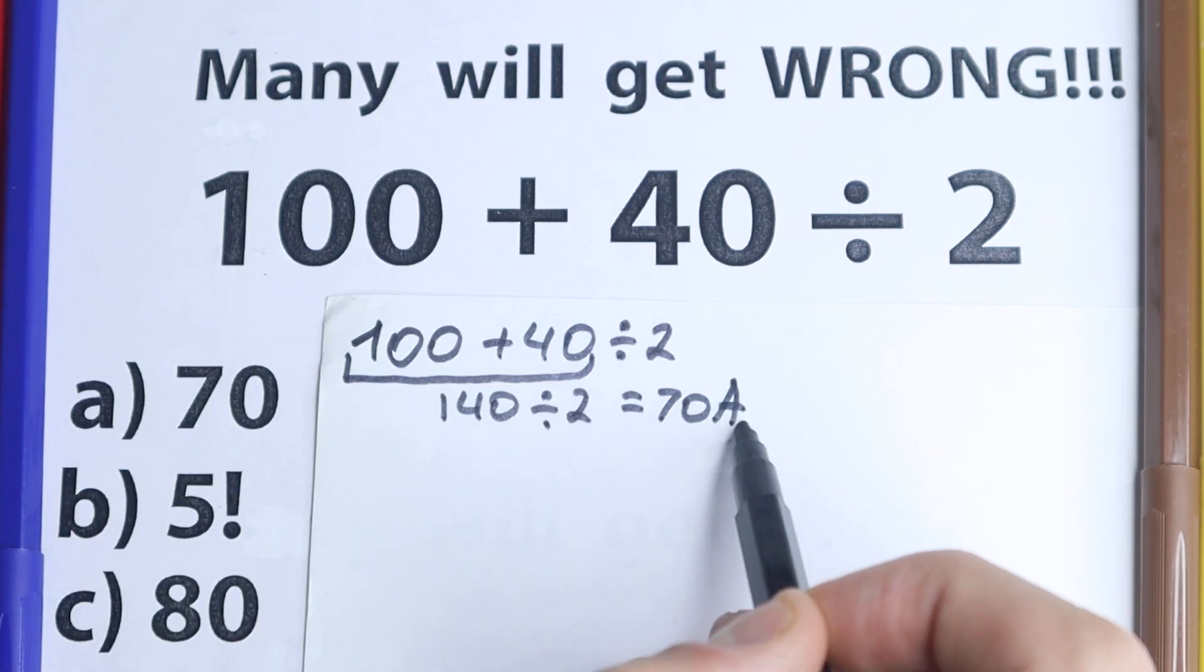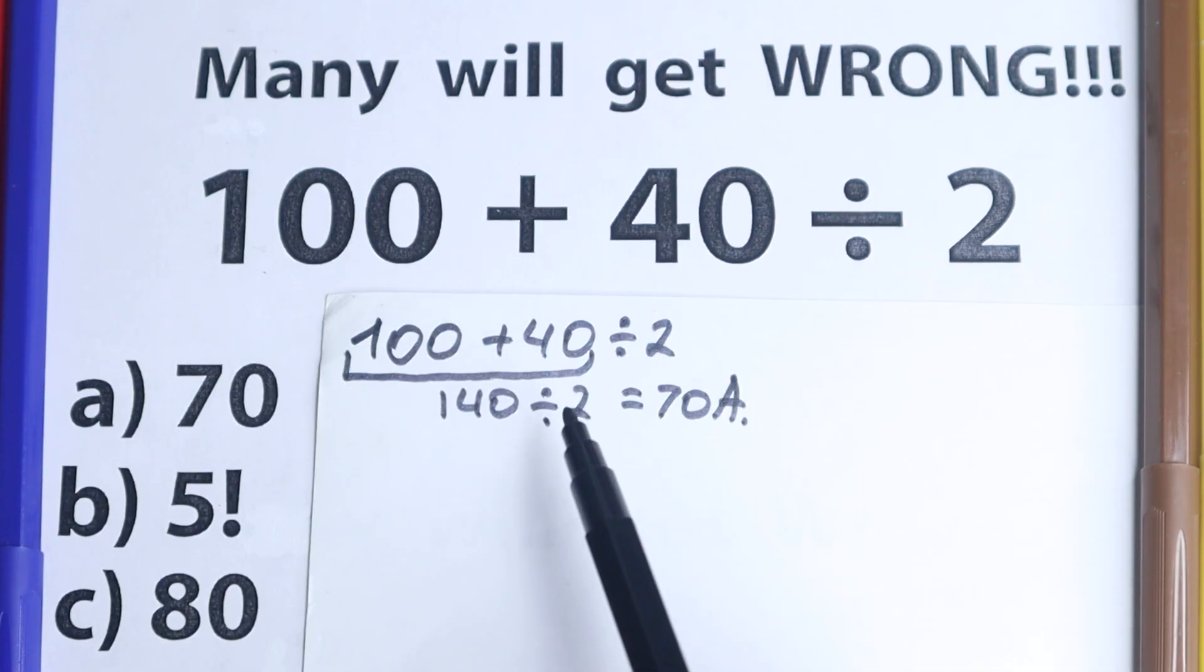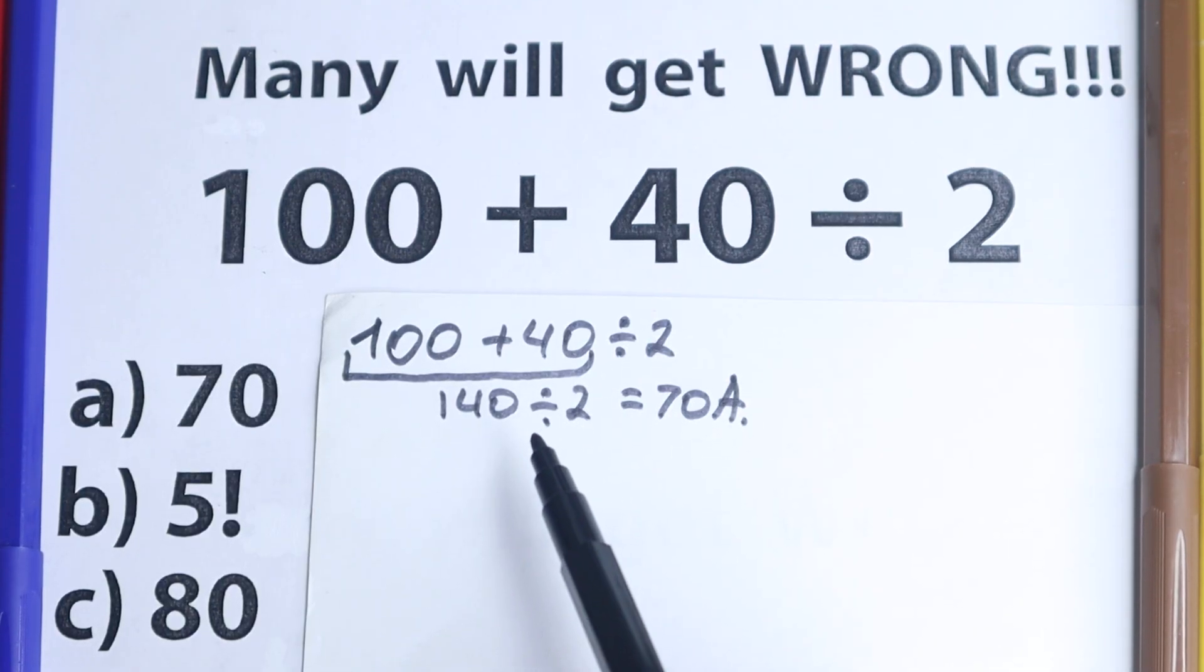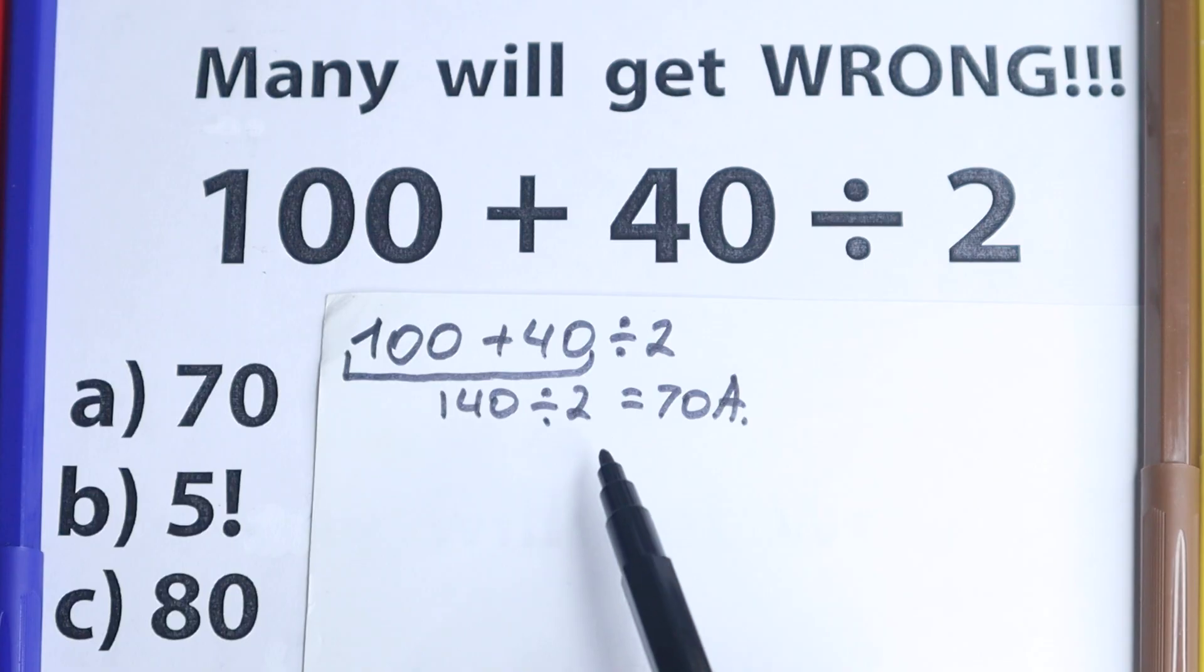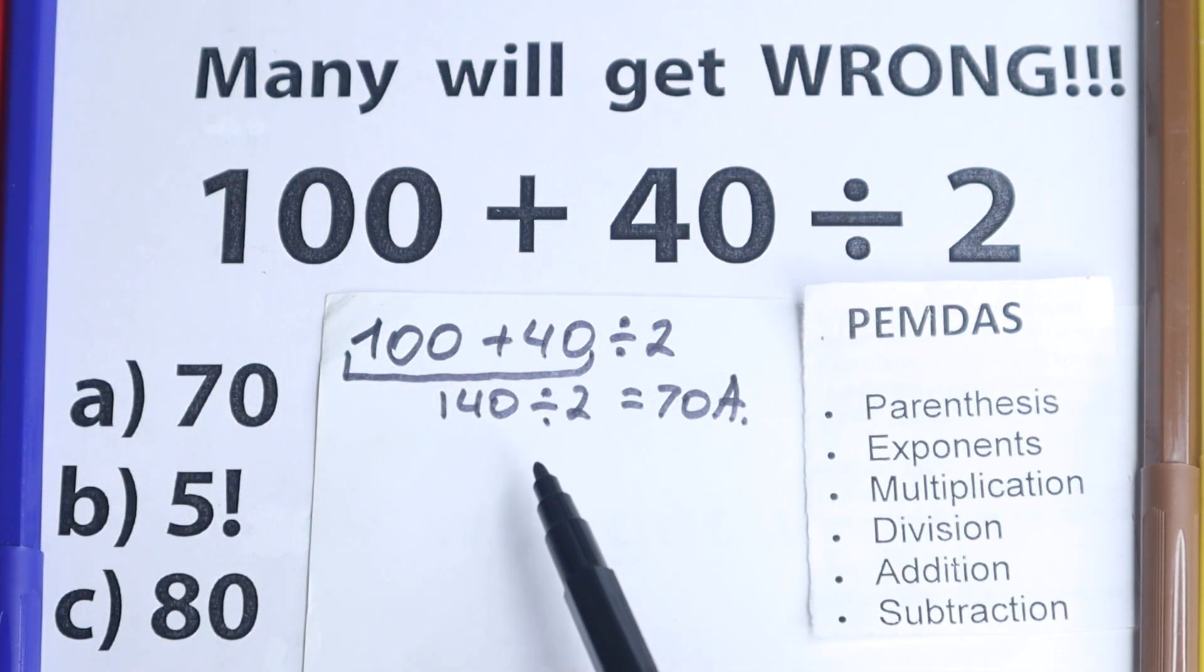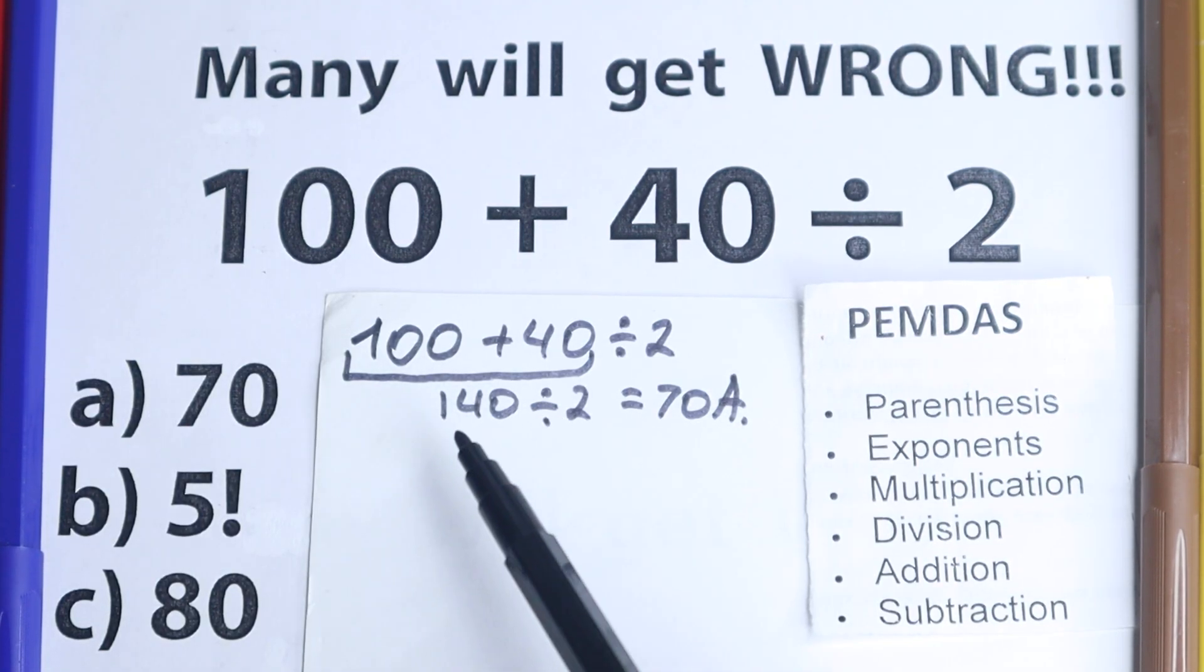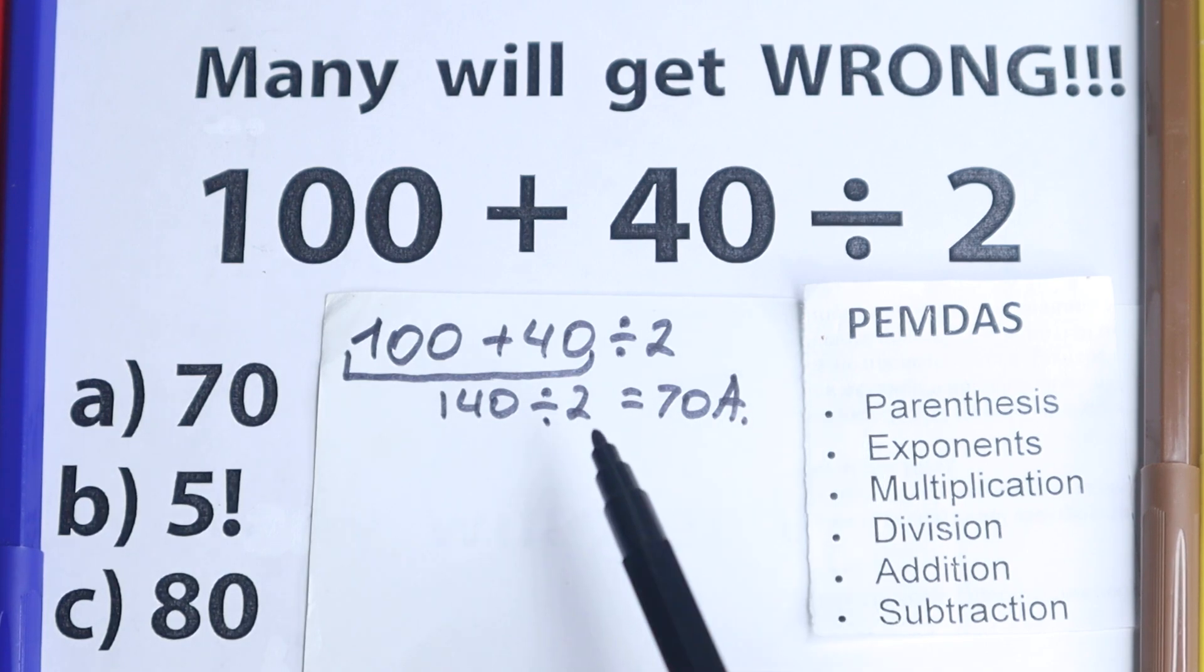And they say option A is the correct answer because they solve it in an obvious way, from left to right. They don't know about order of operations. But right now I don't want to tell that this is correct or incorrect approach. I want to show you this PEMDAS order of operations. Let's look at it.